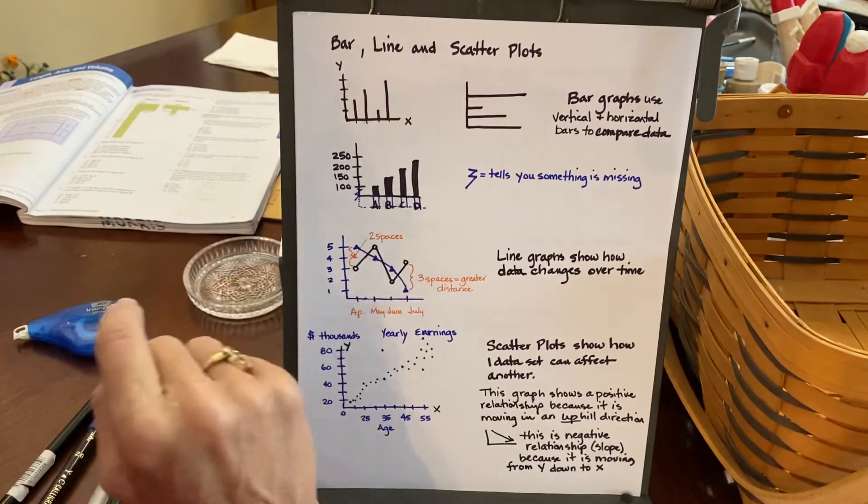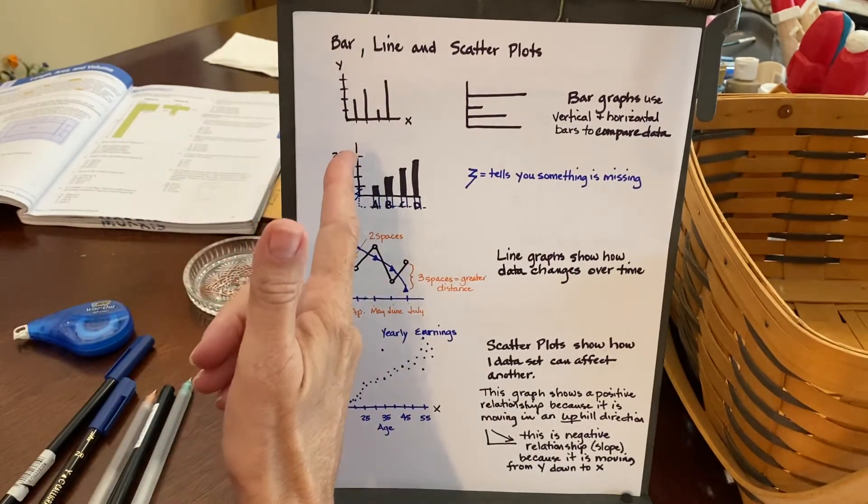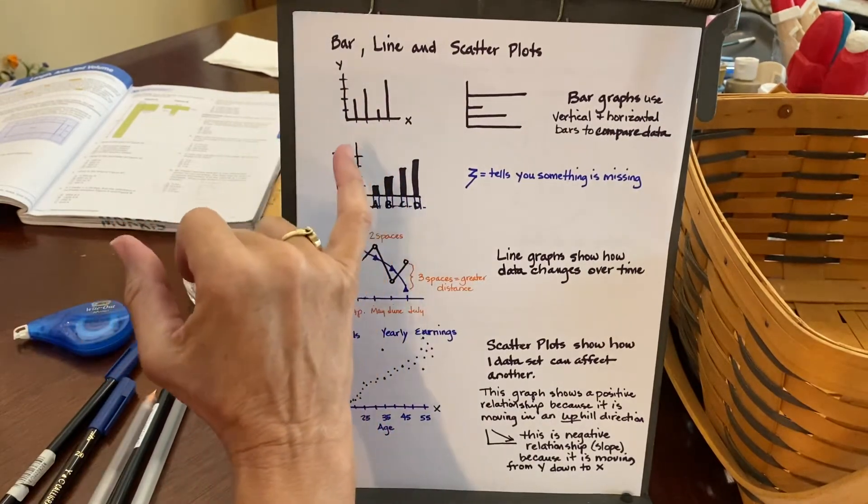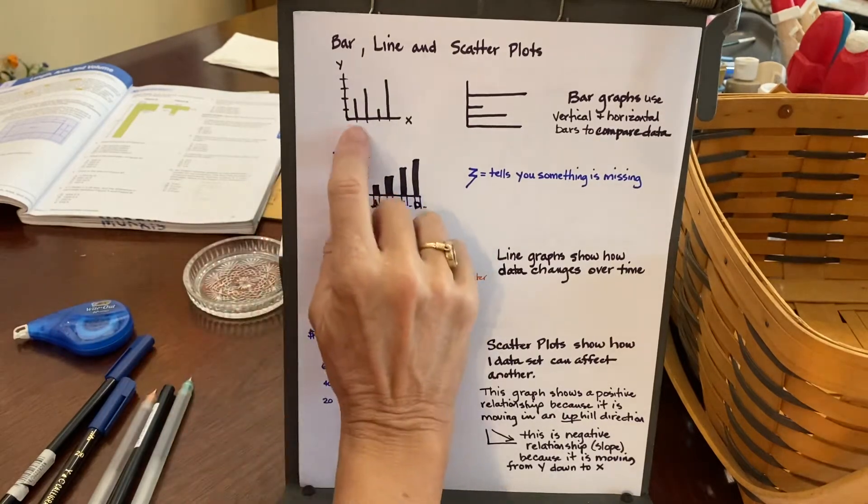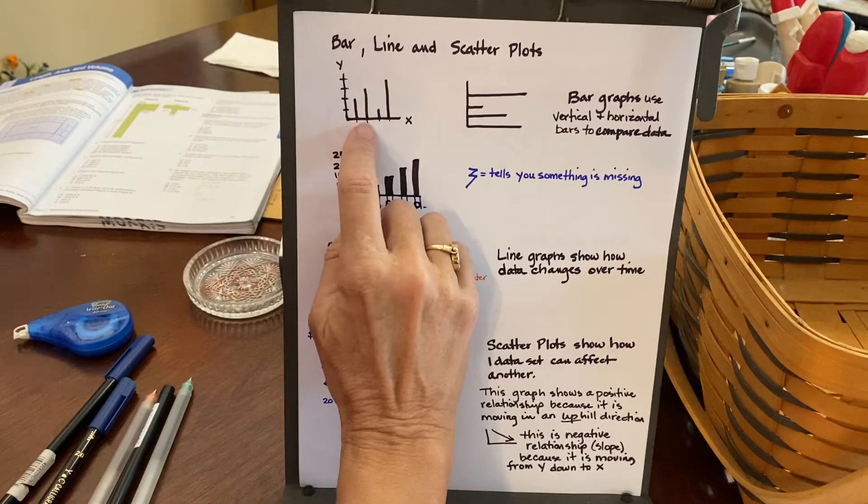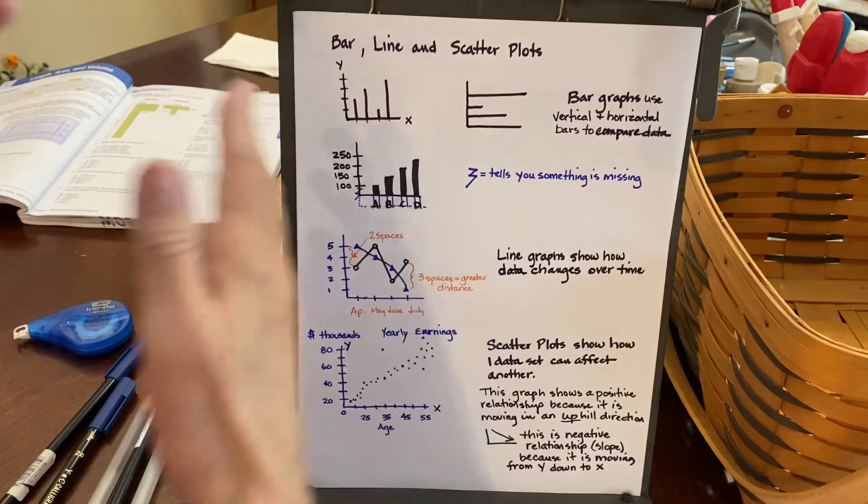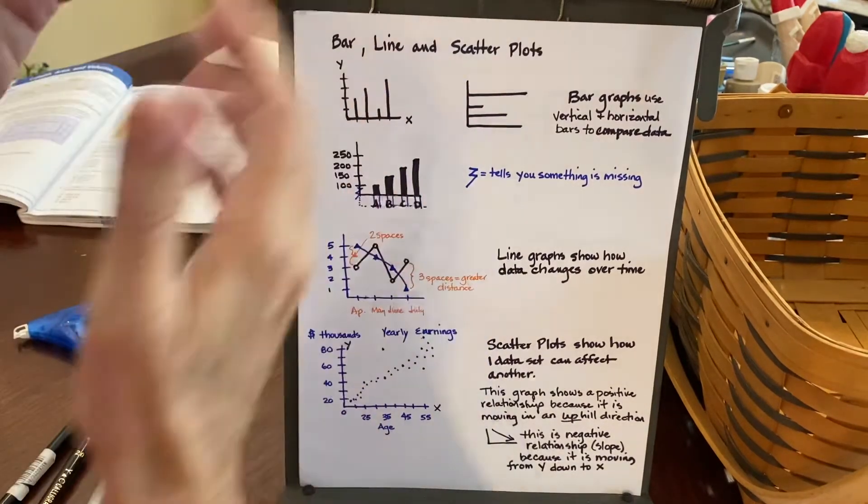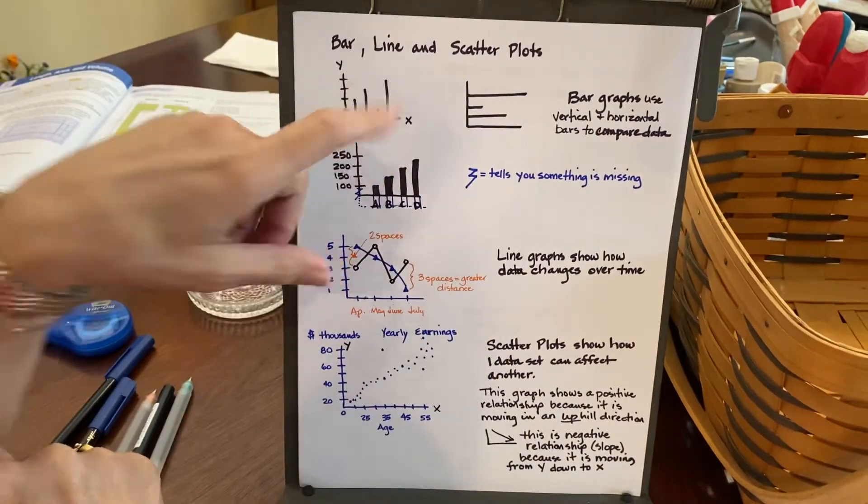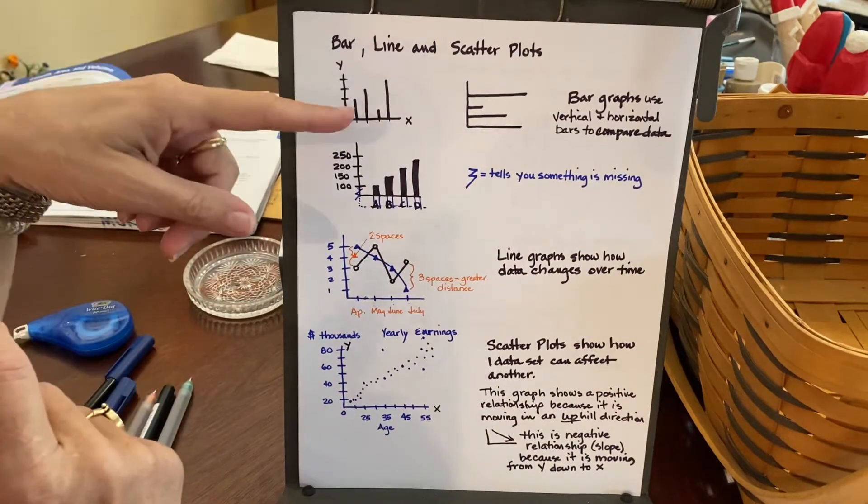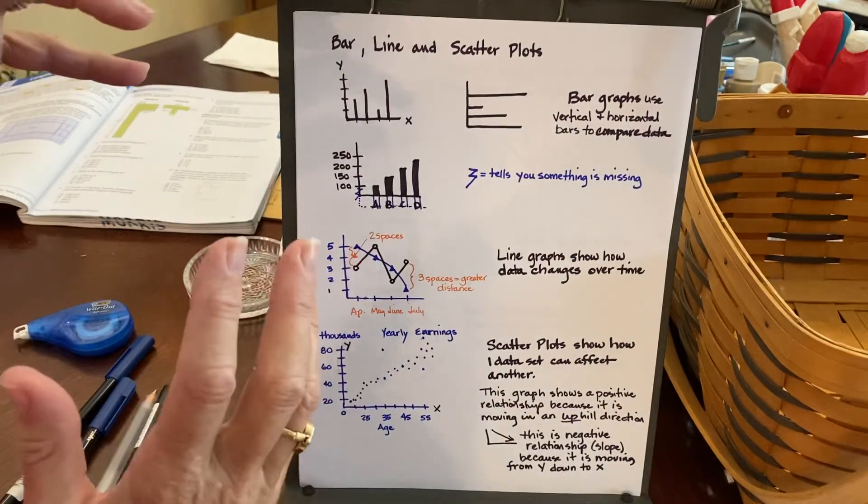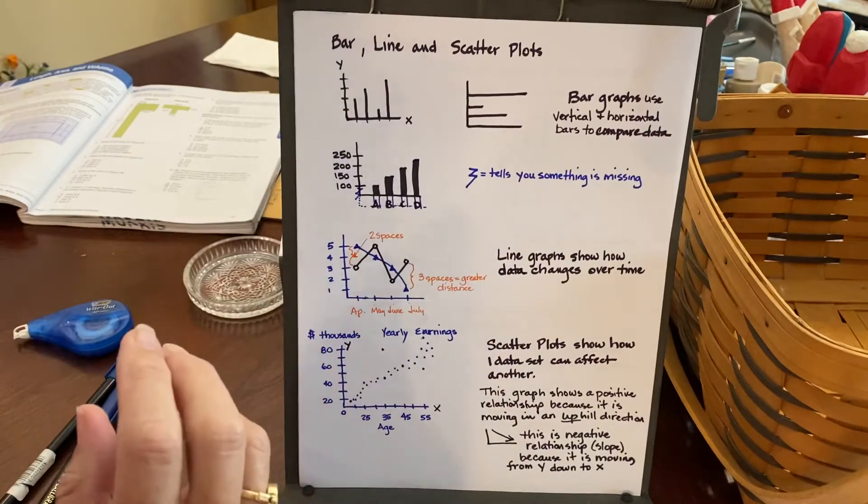All right, so they compare data. It is very easy to look at this, and if I said these are people's names—Sally, Bill, John, and Susie—and I said who had the most of something, you can immediately look at it and tell me it was Susie. So that's the benefit of these. They're easy to compare data just by looking at it.